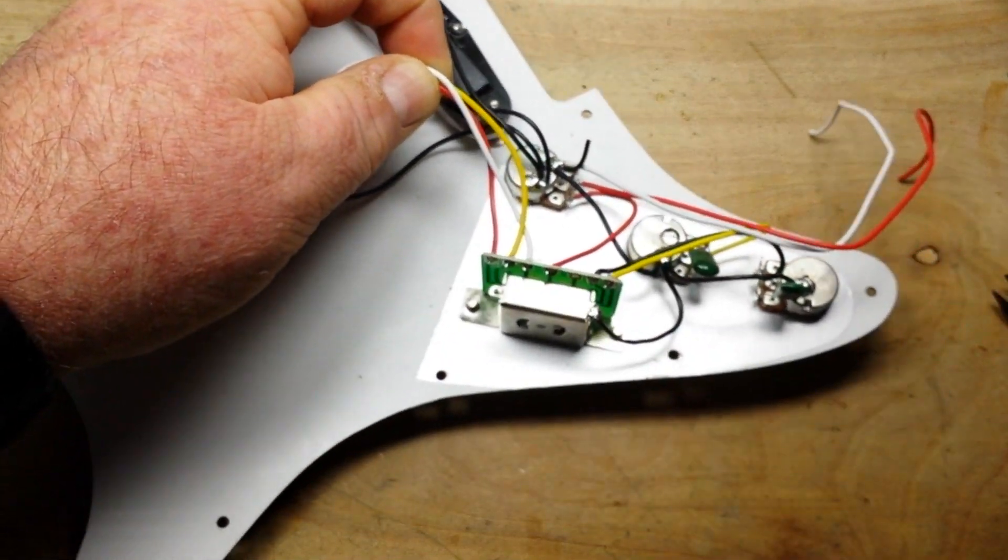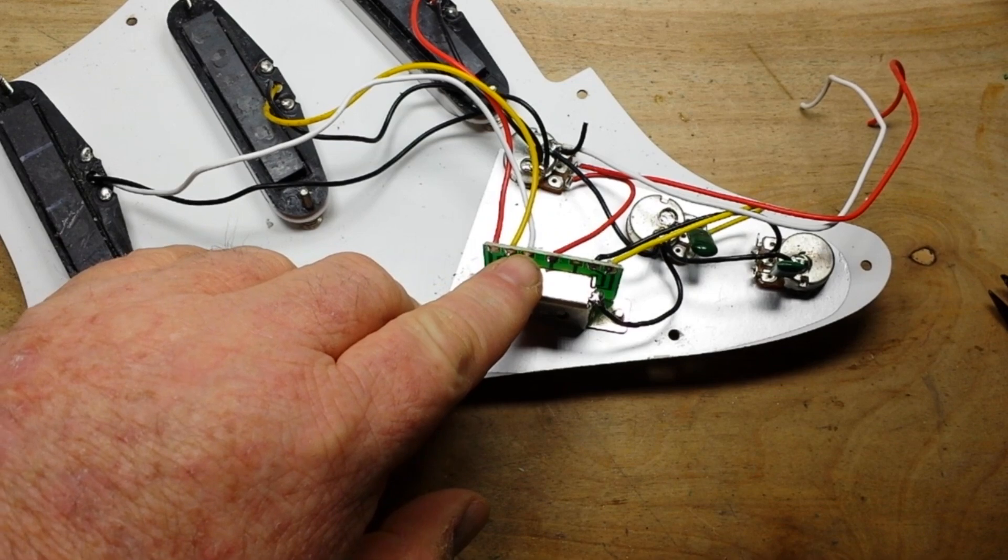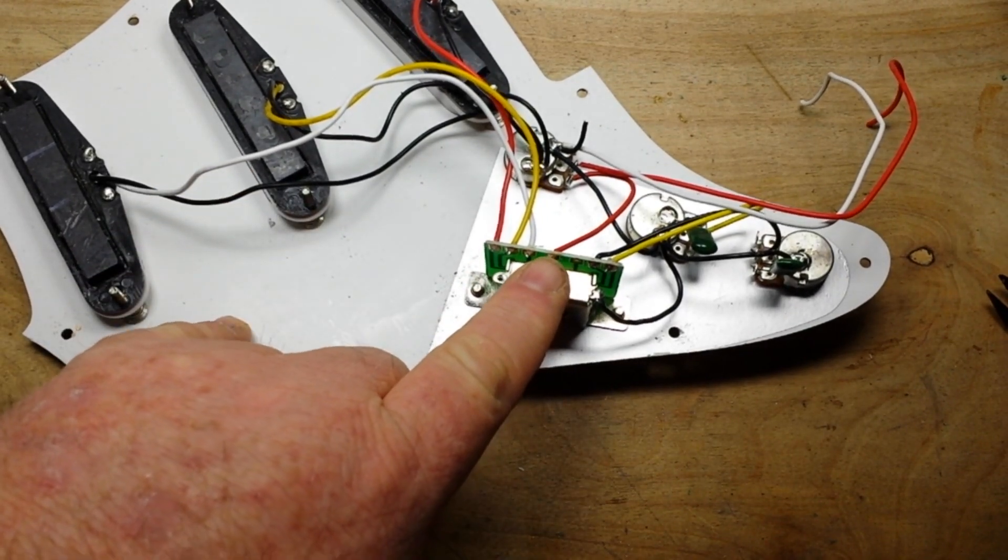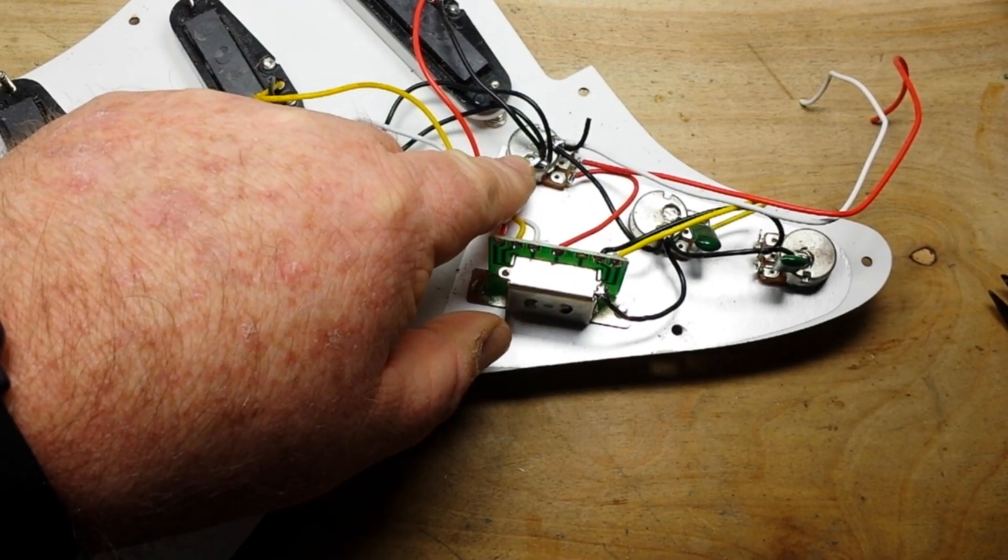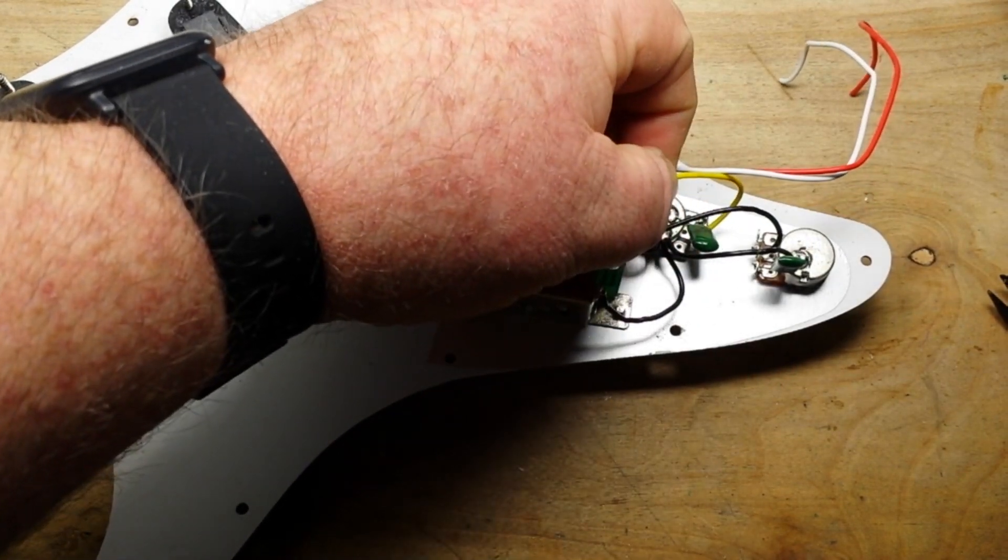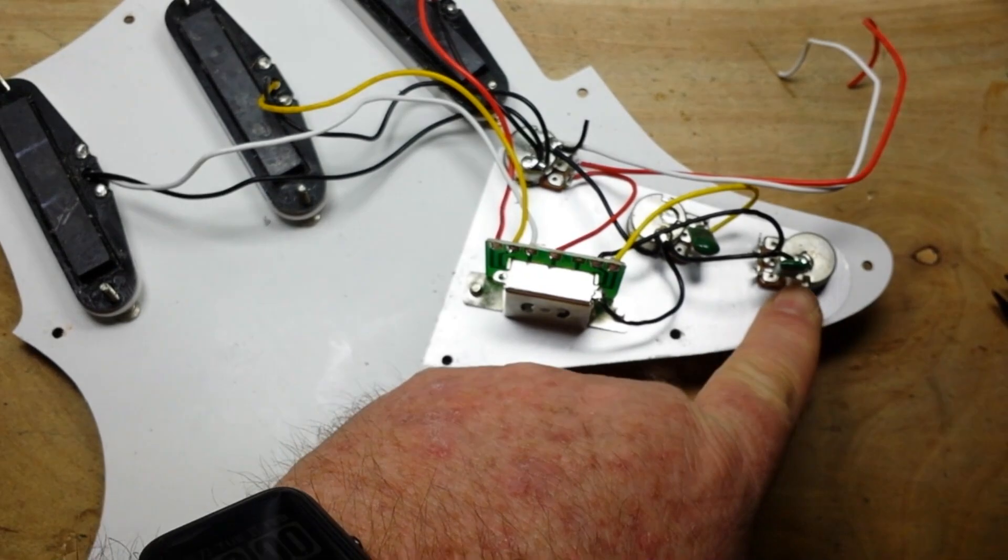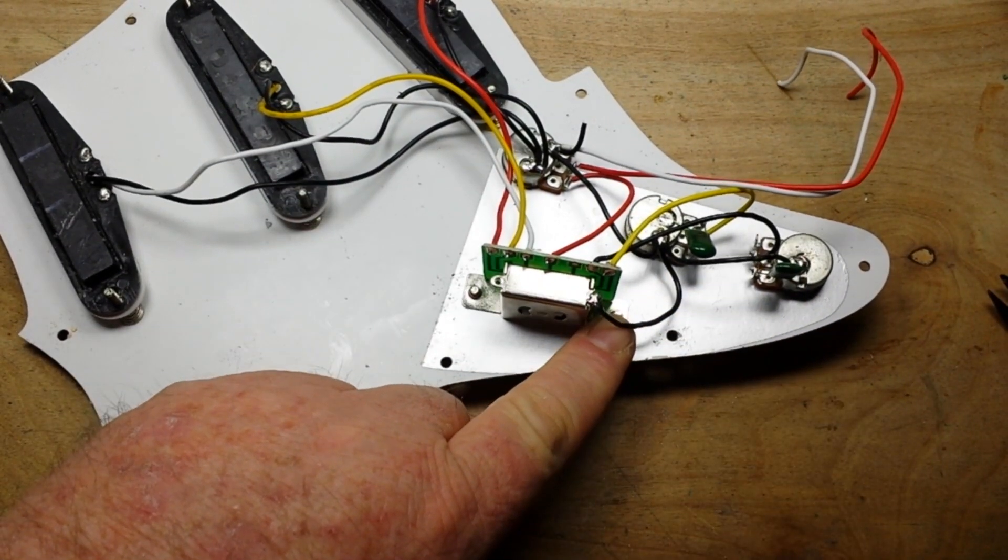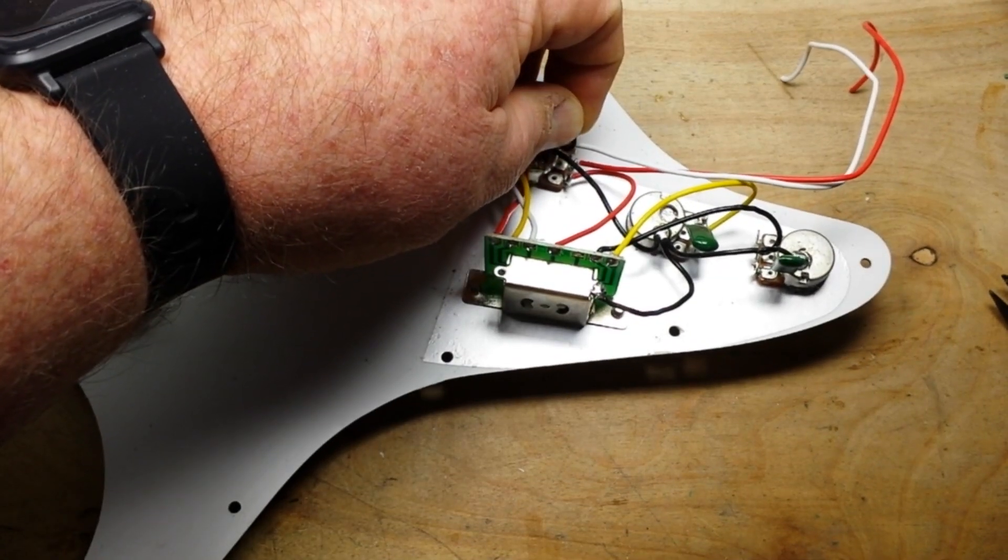So each of the hot wires from the pickups go to the five-way selector switch, and the output from the five-way selector switch goes to the volume control and to one of the tone controls. The other tone control feeds off of this tone control, and you'll notice we also have a ground here and a ground here.